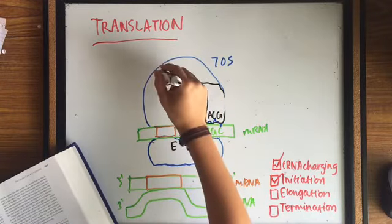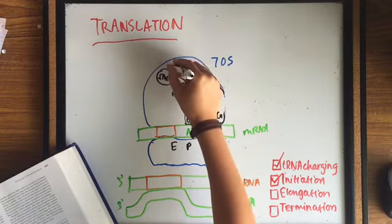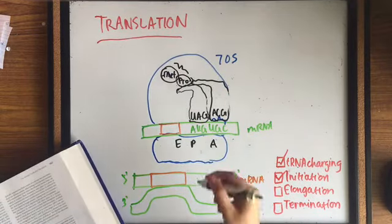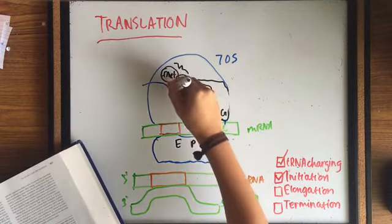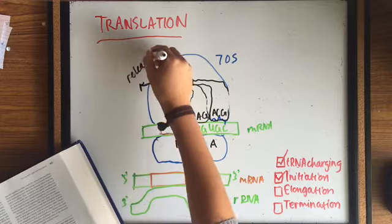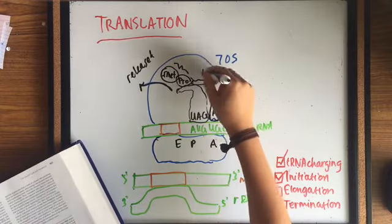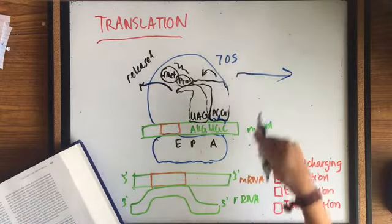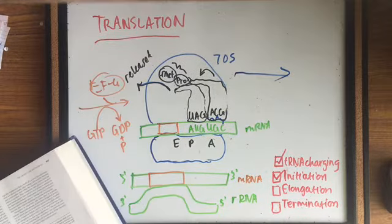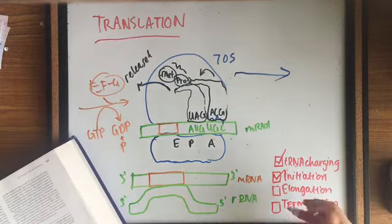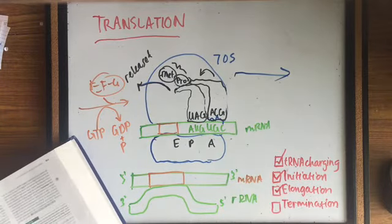A peptide bond forms between the amino acids in the P and A-sites, and the tRNA in the P-site releases its amino acid. The ribosome moves down the mRNA to the next codon, which is translocation, and which requires EF-G and GTP. The tRNA that was in the P-site is now in the E-site, from which it moves into the cytoplasm. Now that the A-site is open, it's ready to receive another tRNA.